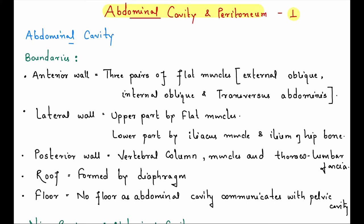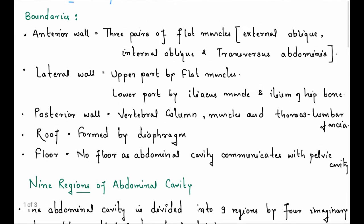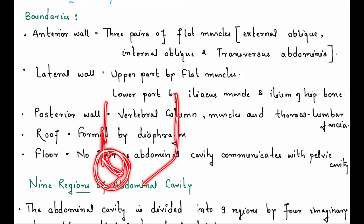So, abdominal cavity and peritoneum. Abdominal cavity boundaries: anterior wall - flat muscles - external oblique, internal oblique, transverse abdominis. Lateral wall - flat muscles. Lower - iliac muscle, ilium of hip bone.